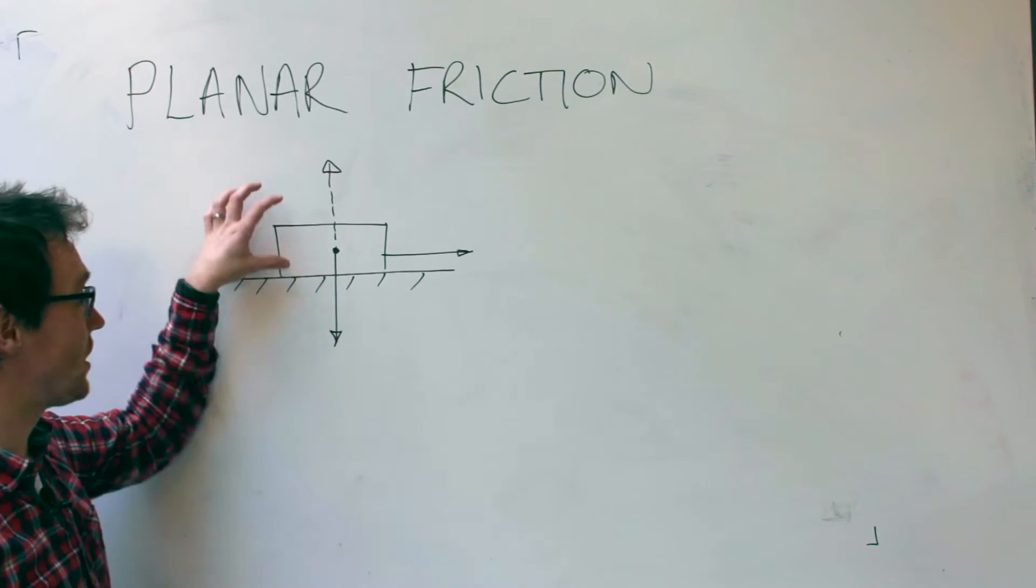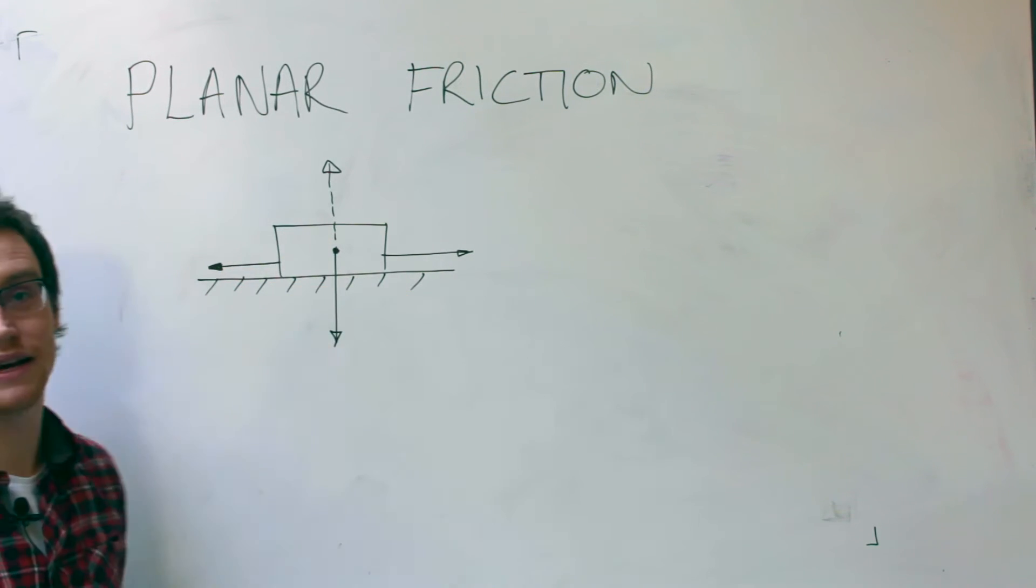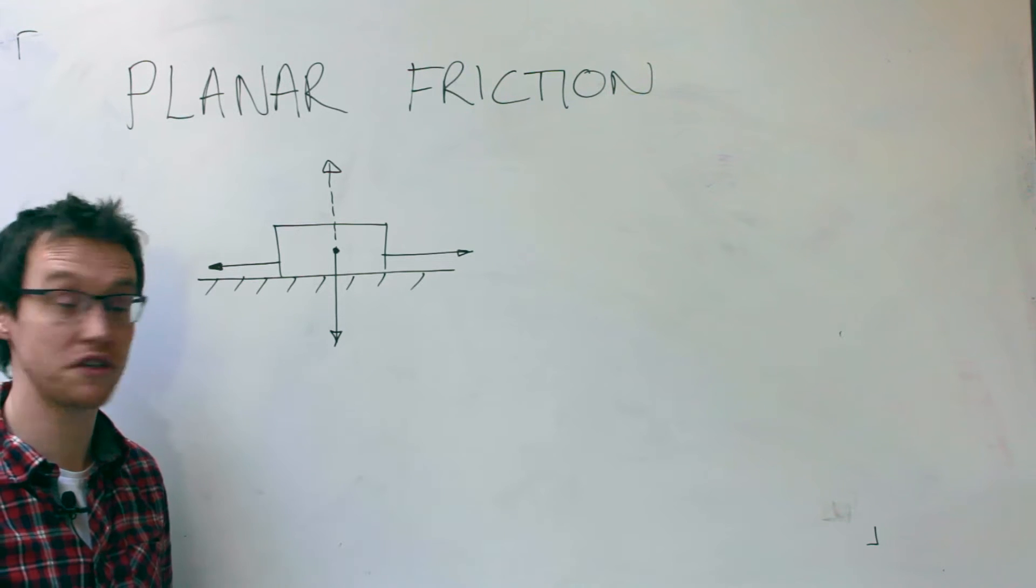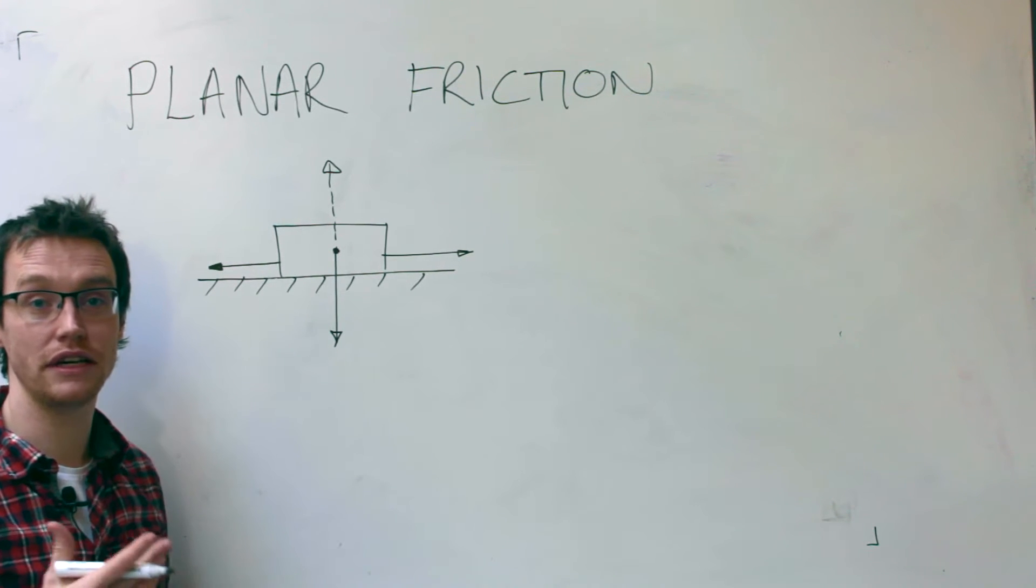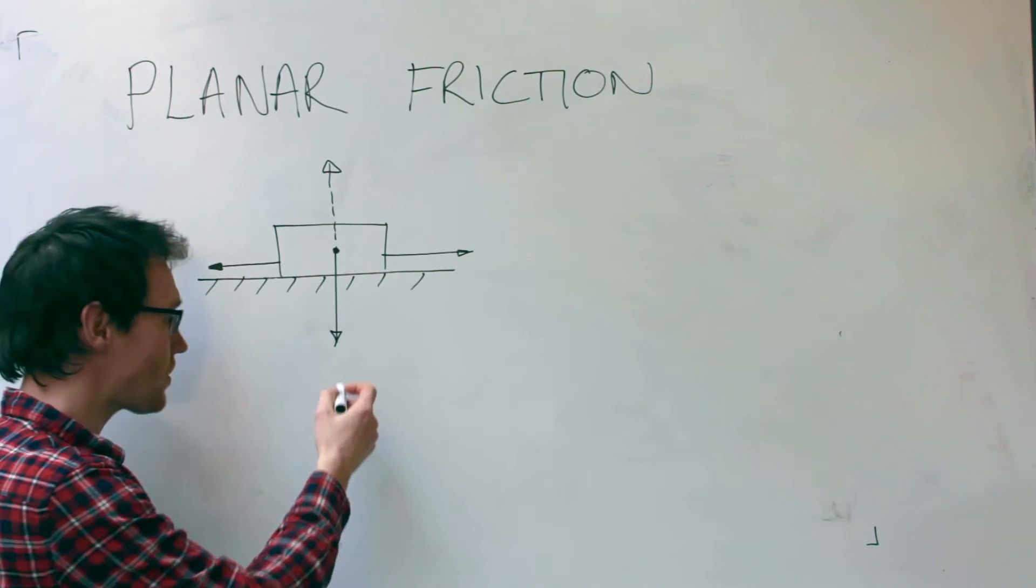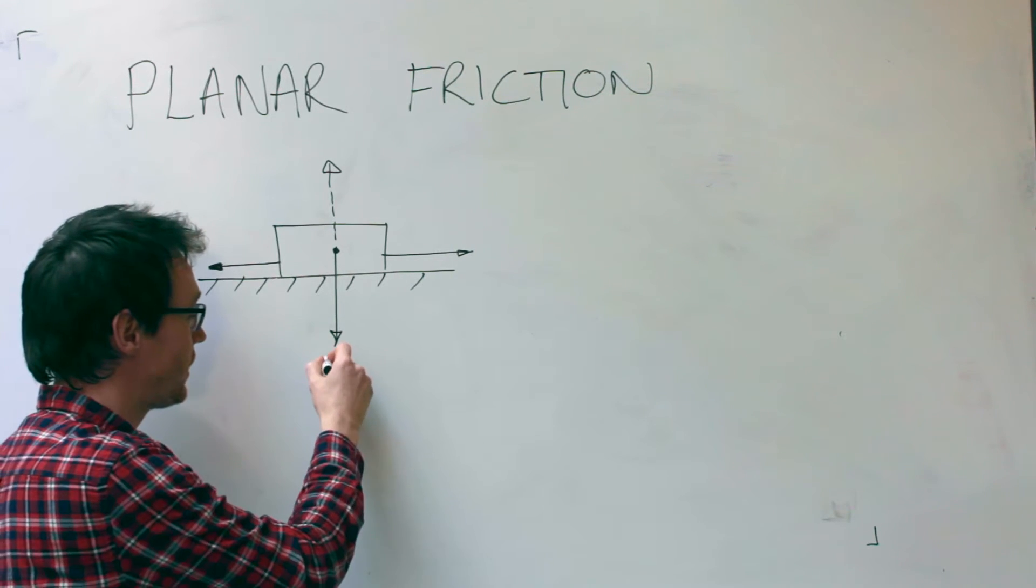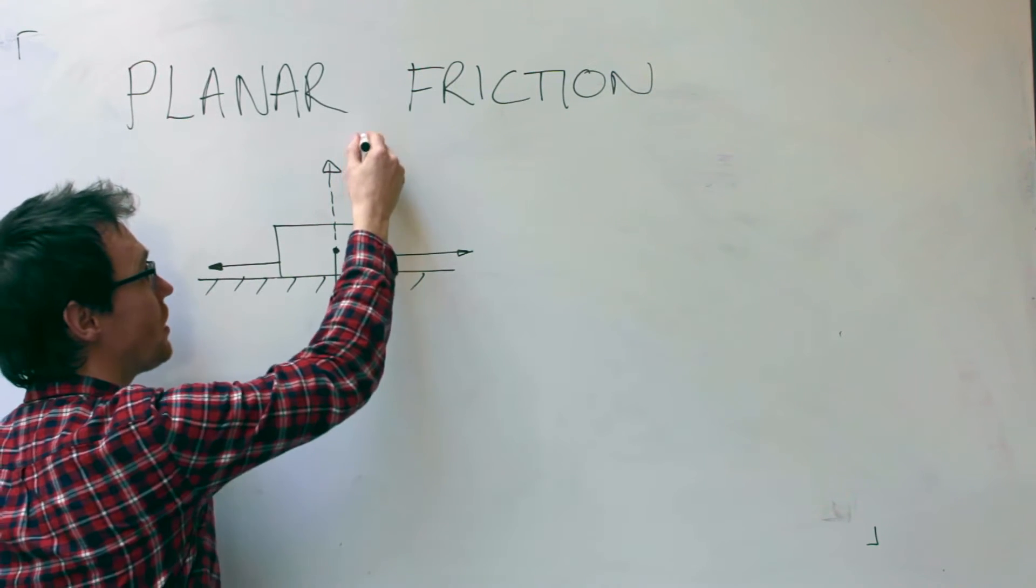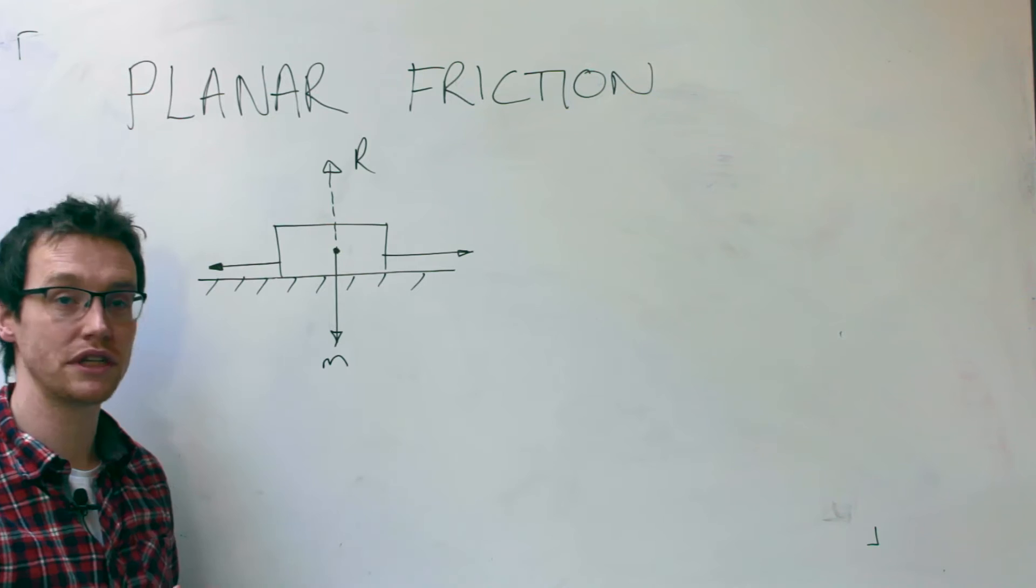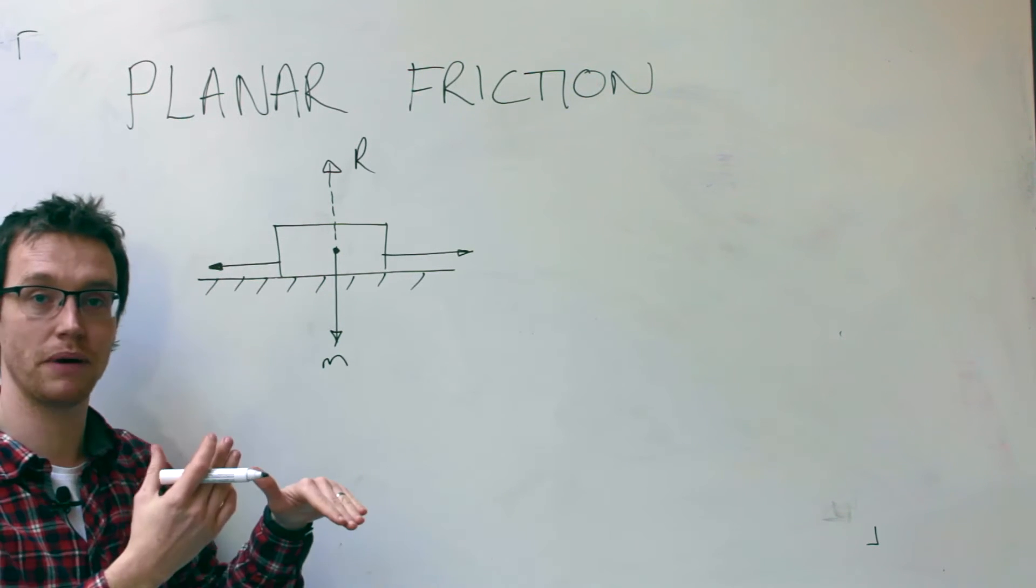This FBD represents a block sat on a flat plane with a few arrows to denote forces. The first one is the mass of the object itself, denoted by M. The next is what's known as R, the resultant force, which is how much the plane itself pushes back.